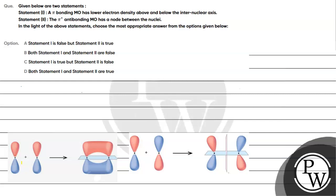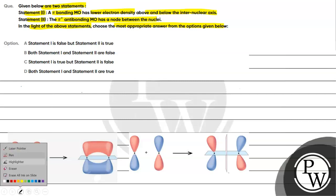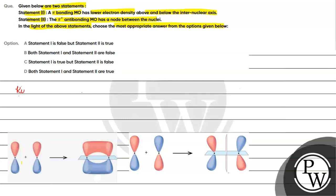Let's read this question. Given below are two statements: Statement one - a pi bonding molecular orbital has lower electron density above and below the internuclear axis. Statement two - a pi star antibonding molecular orbital has a node between the nucleus. Choose the most appropriate answer from the options given below.